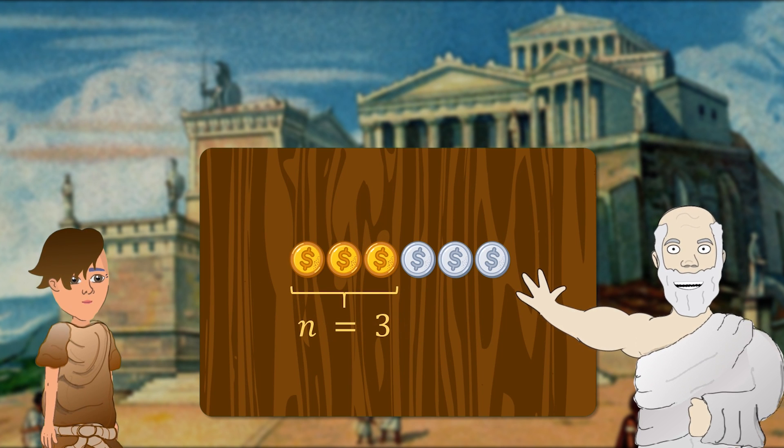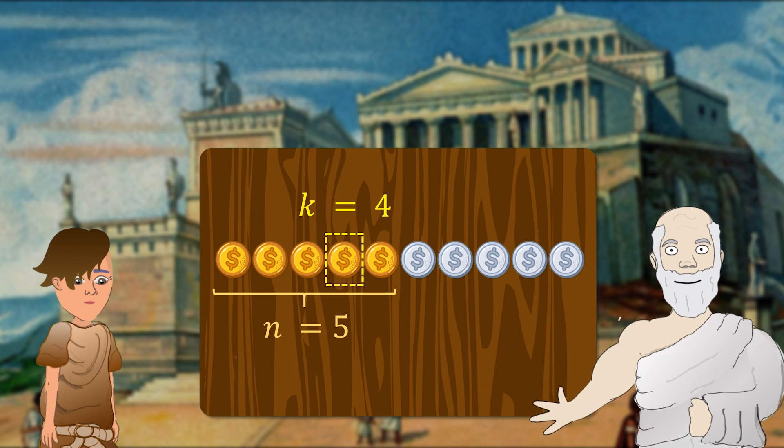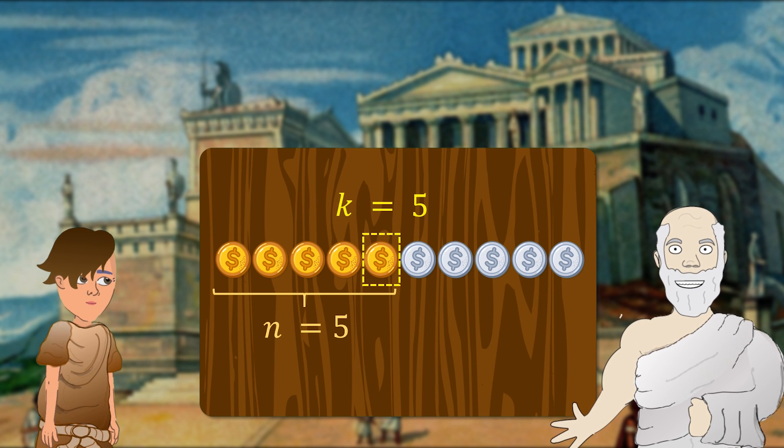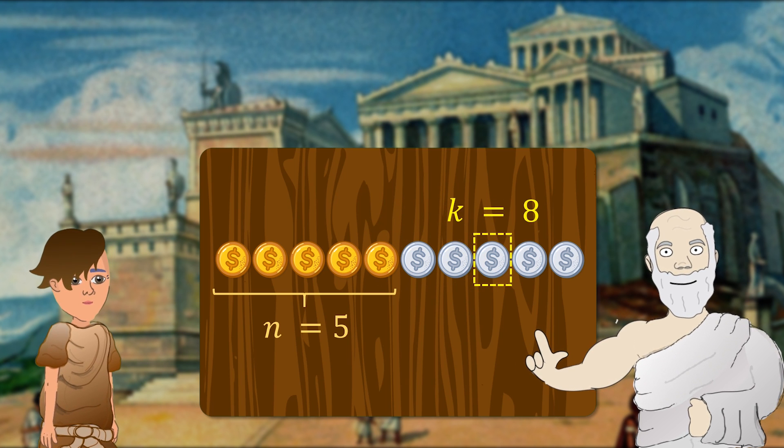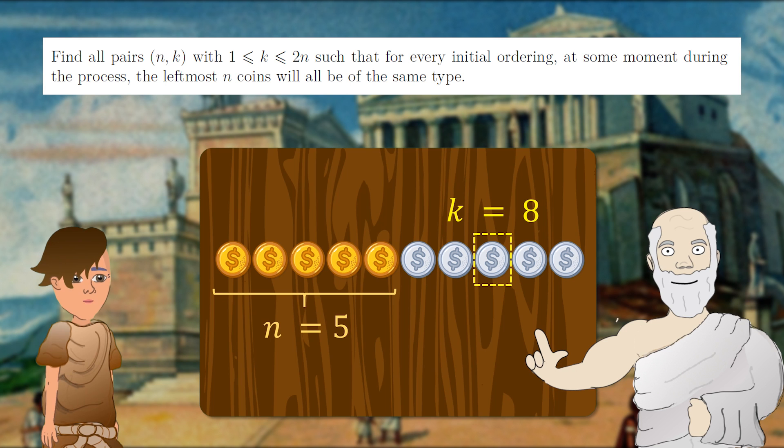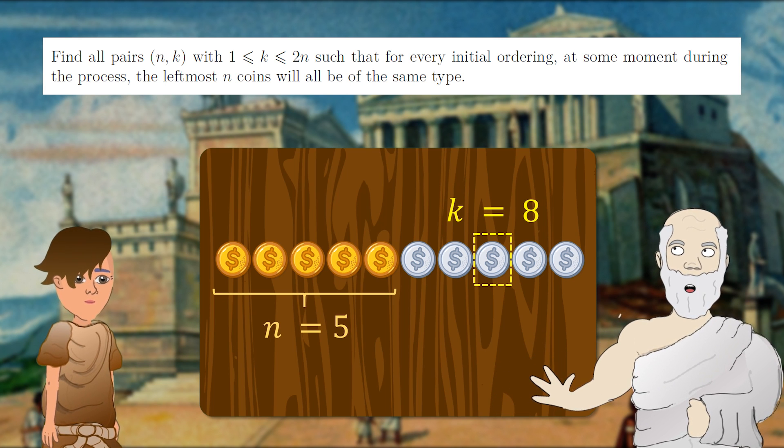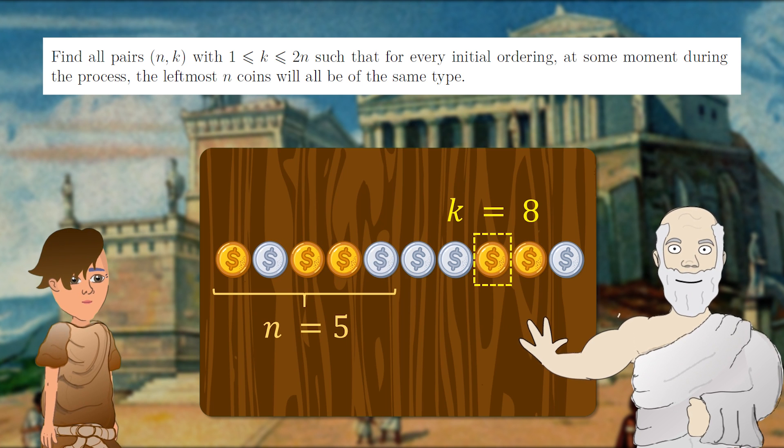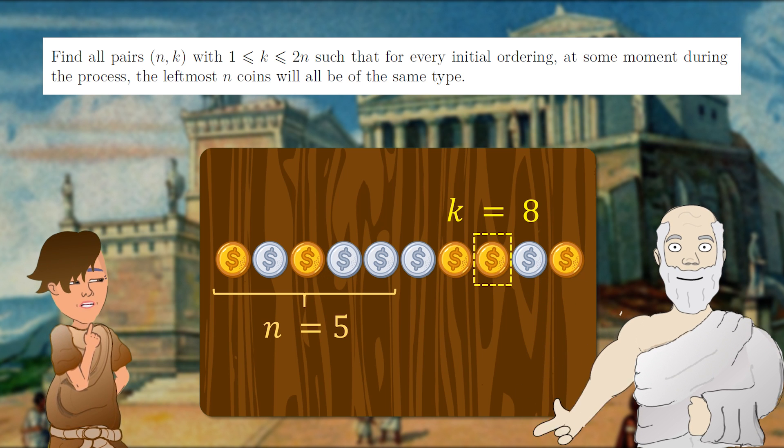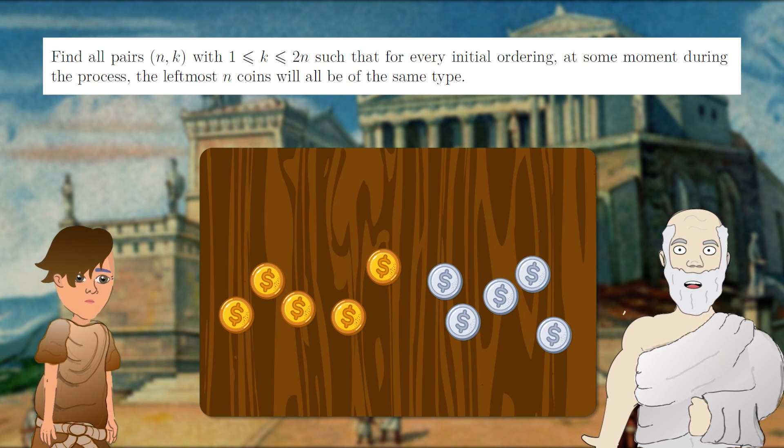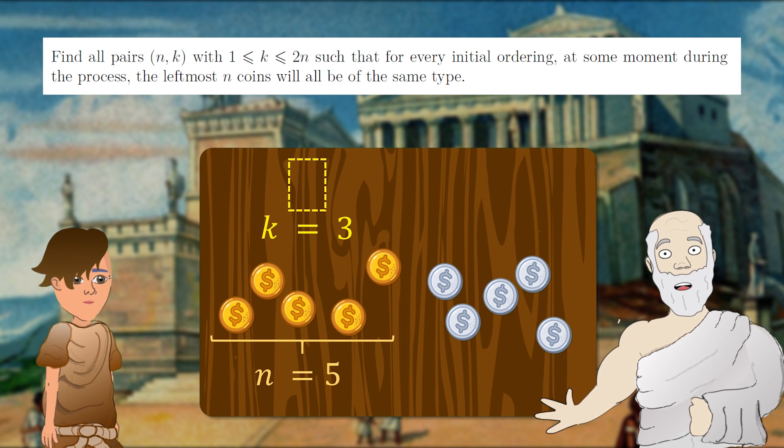Now our problem is to consider all possible values of n. And instead of just the fourth position, we may consider any position k. And we must find all pairs n and k, for which the leftmost n coins will all have the same type for any initial ordering of coins. I'm confused. Let's take another example. Say, n equals five and k equals three. Please arrange the coins.